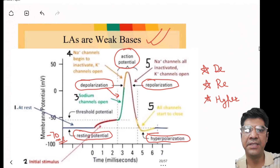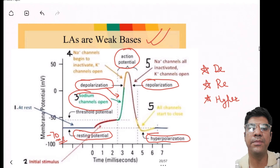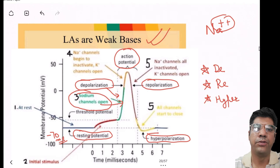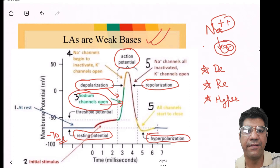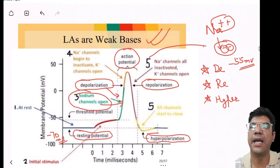When the sodium channels open, sodium rushes into the neurons. Due to the influx, positively charged sodium ions reduce the negative charge inside the cells, making the membrane potential less negative. If the depolarization reaches a critical threshold — typically around minus 55 millivolts — it will trigger the initiation of an action potential.